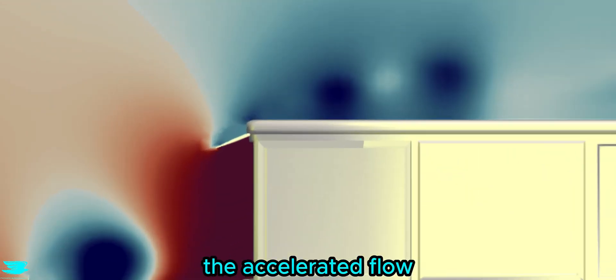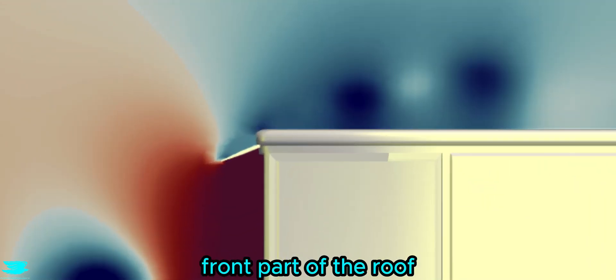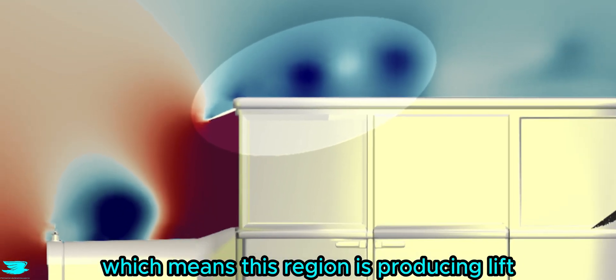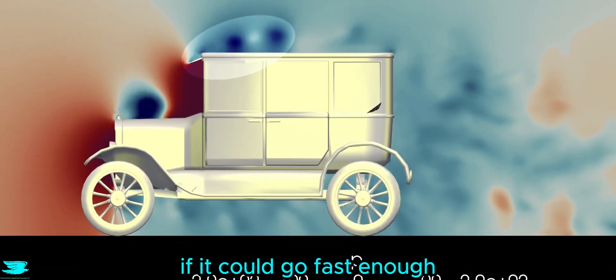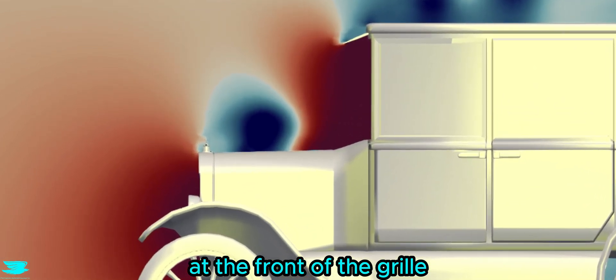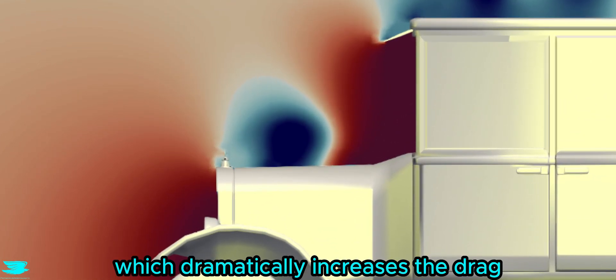Looking at the pressure, the accelerated flow and even the wake over the front part of the roof results in very low pressure, which means this region is producing lift, and that would reduce the car's stability if it could go fast enough. As expected, there are very high pressure zones at the front of the grille and the windshield, which dramatically increases the drag.